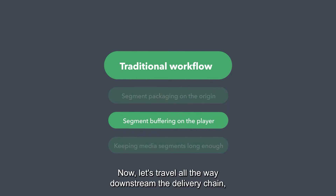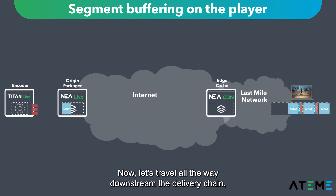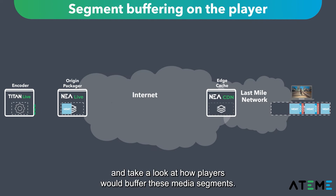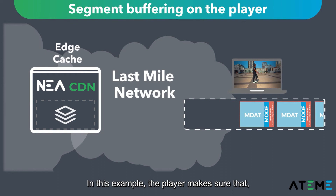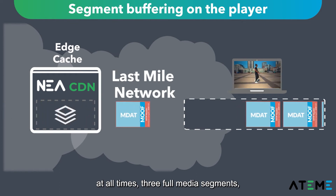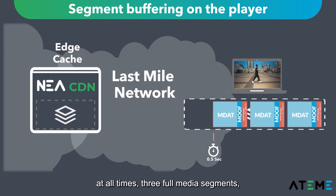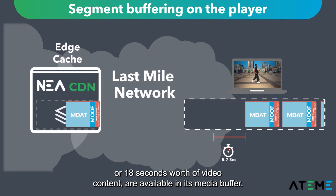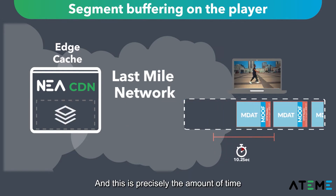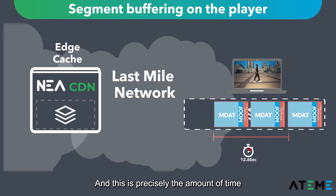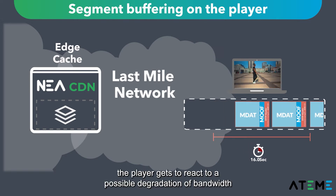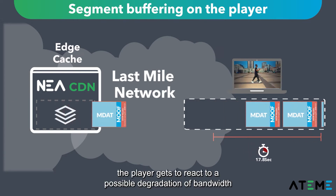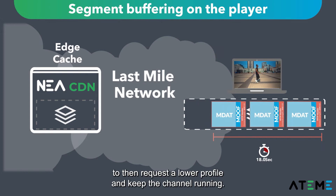Now let's travel all the way downstream the delivery chain and take a look at how players would buffer these media segments. In this example, the player makes sure that at all times, 3 full media segments — or 18 seconds worth of video content — are available in its media buffer. This is precisely the amount of time the player gets to react to a possible degradation of bandwidth, to then request a lower profile and keep the channel running.